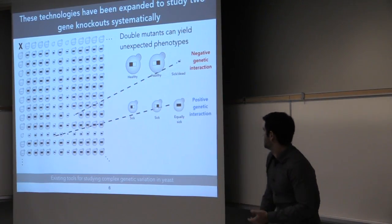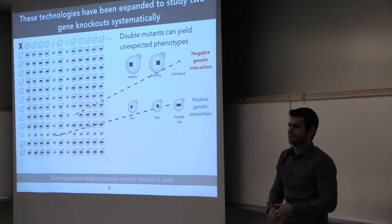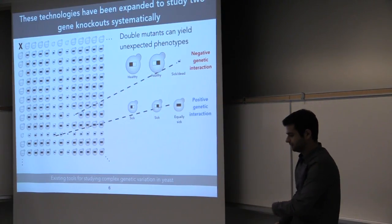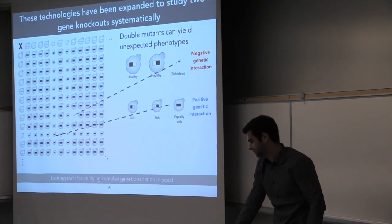Or similarly, you can have two knockouts which make the cell sick, and you'd expect that if they're both combined in the same cell, it would be even sicker, but then if you see that it's just as sick as any single knockout, this would be an example of a positive genetic interaction.